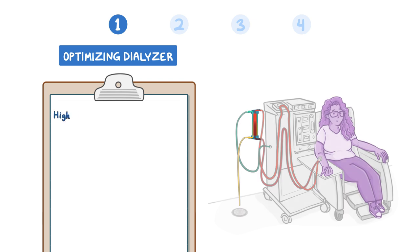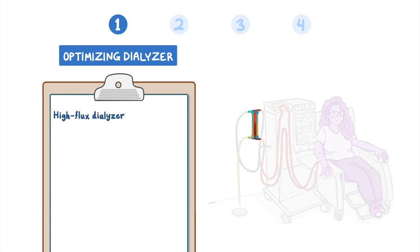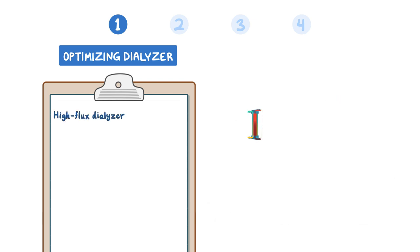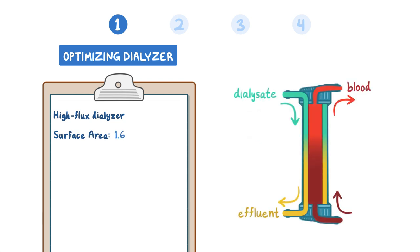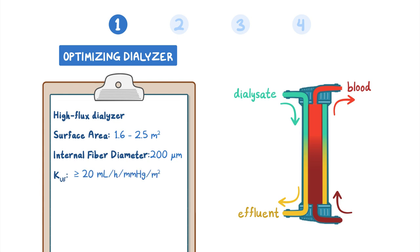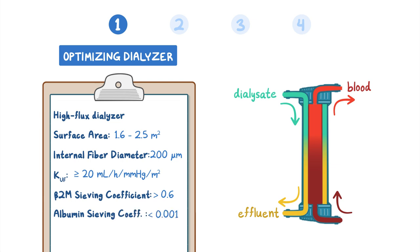Step 1 involves optimizing dialyzer surface area and type. It is important to use a high-flux dialyzer appropriate for hemodiafiltration, typically with a surface area between 1.6 and 2.5 square meters, an internal fiber diameter of at least 200 microns, an ultrafiltration coefficient greater than 20 milliliters per hour per millimeter of mercury per square meter, a beta-2 microglobulin sieving coefficient greater than 0.6, and an albumin sieving coefficient less than 0.001.